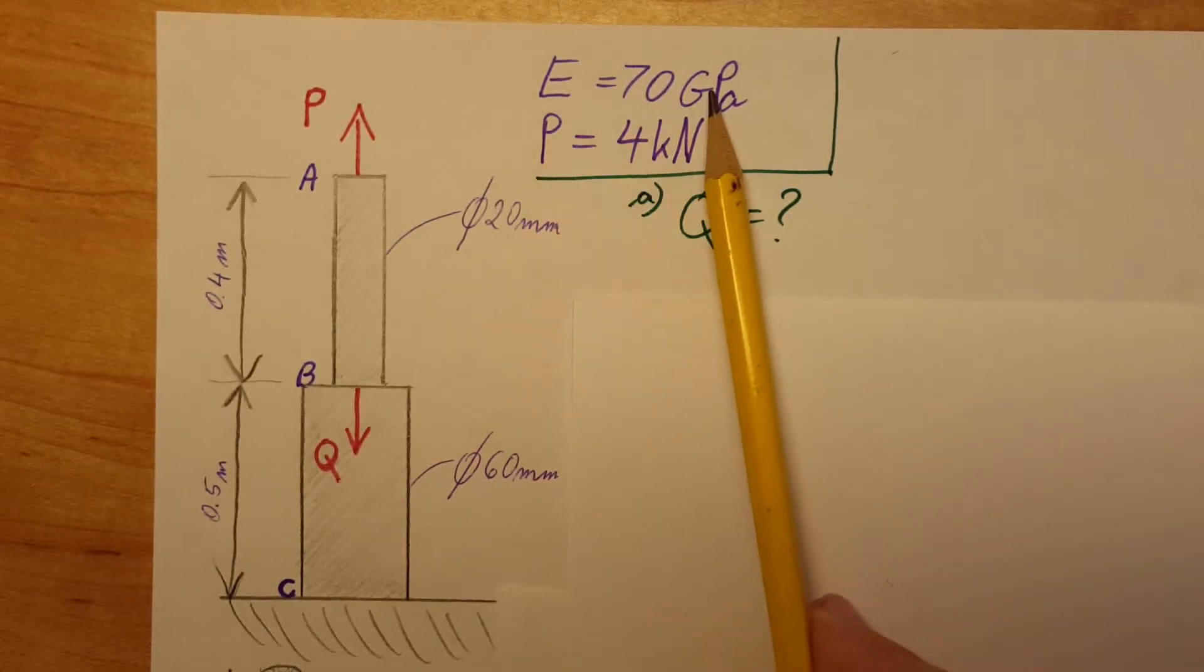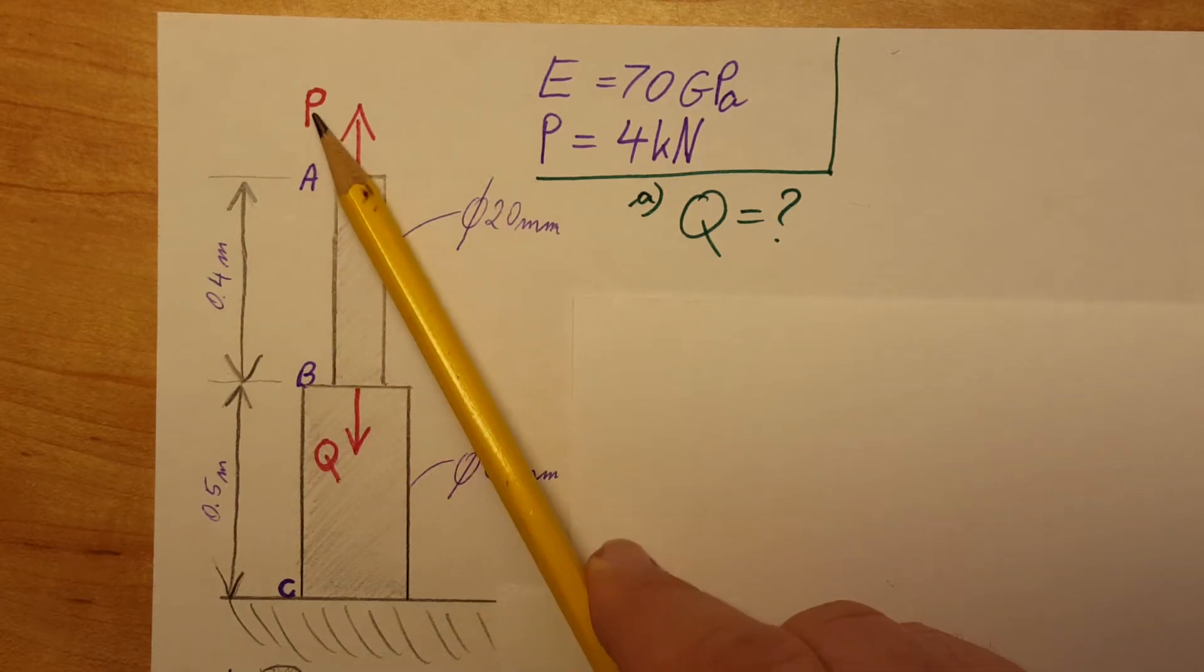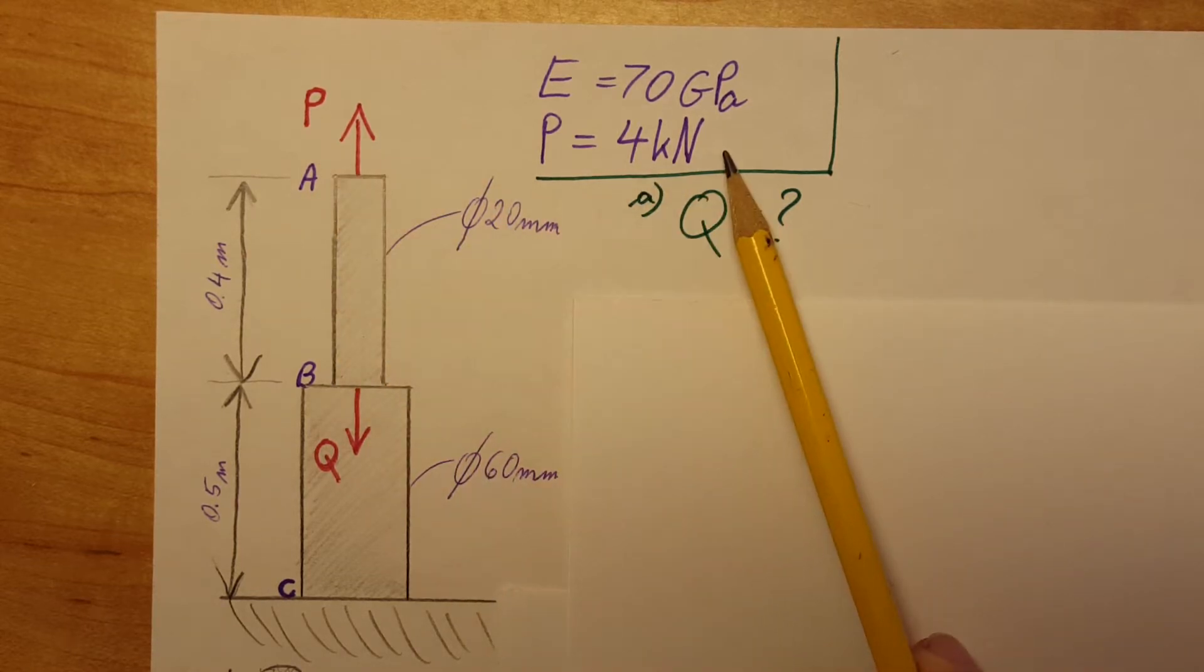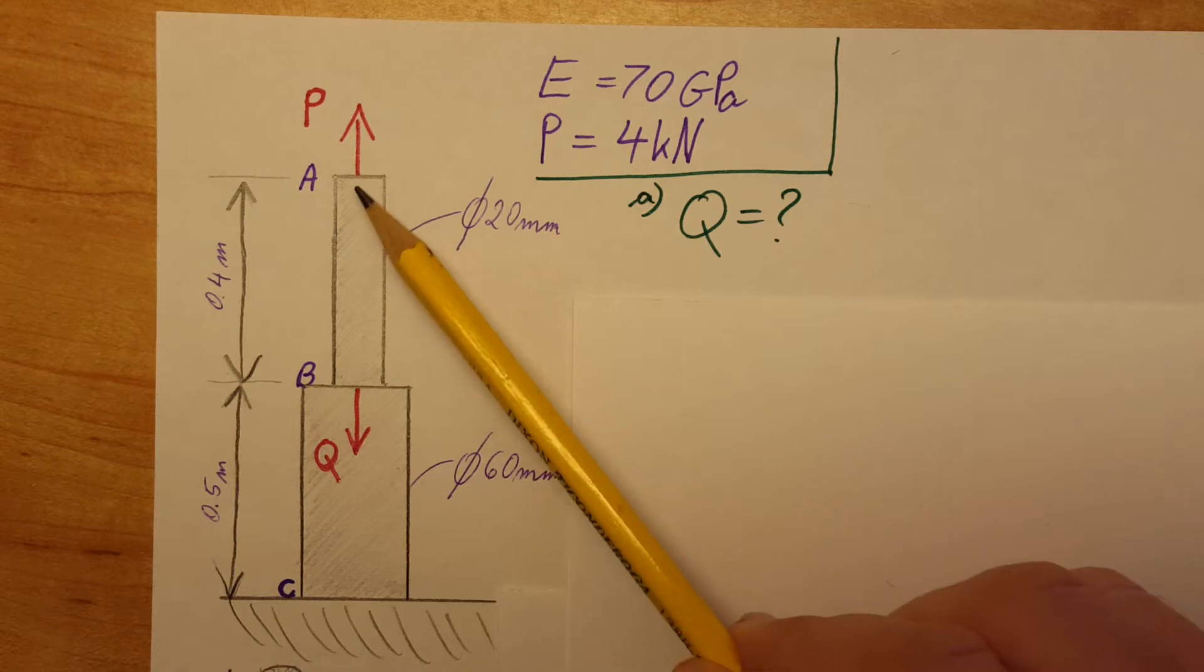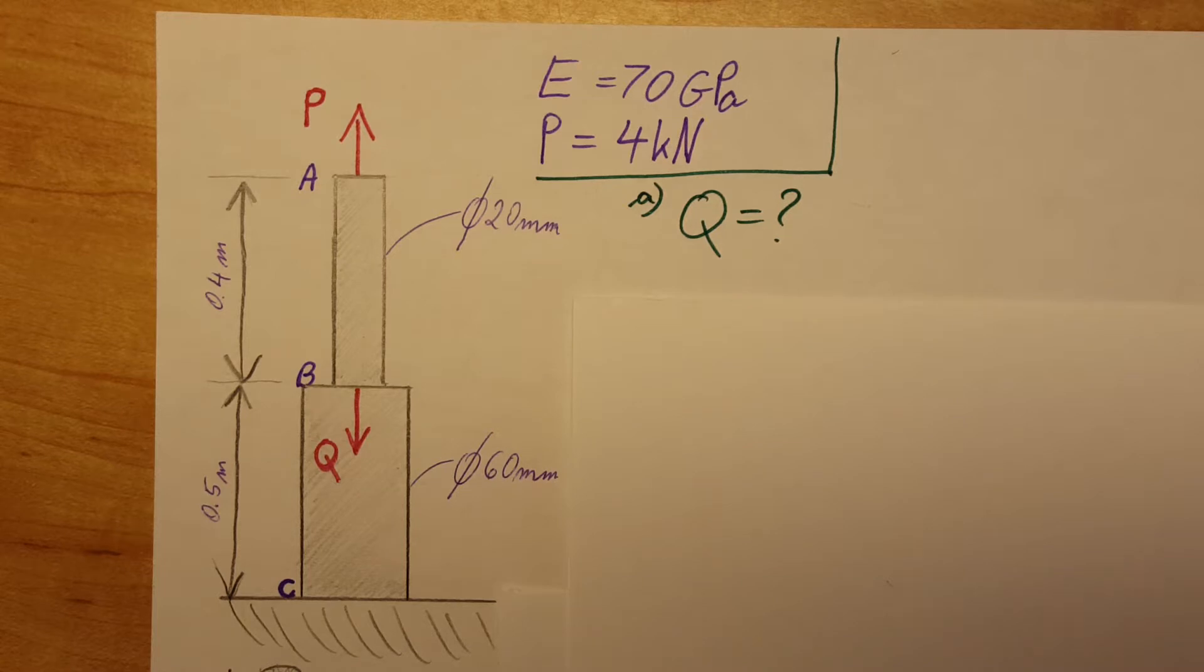We have E given, which is 70 gigapascals. We also know P, which is 4 kilonewtons. They want us to determine force Q in such a way where there will be no deflection at point A.